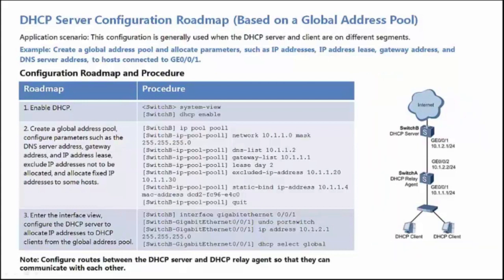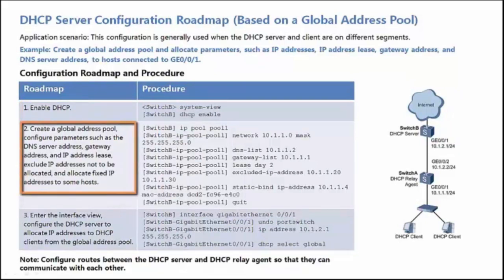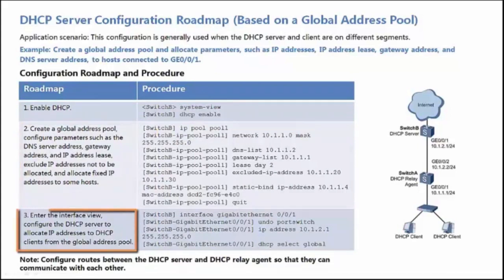The configuration roadmap includes three steps. Step 1: Enable DHCP on the switch. Step 2: Create a Global Address Pool and configure related network parameters.